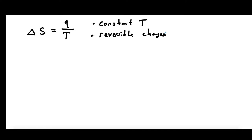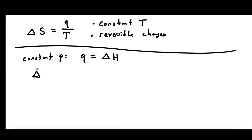Now often, we'll be working at constant pressure. So if we impose constant pressure, then the heat transfer is going to equal the change in enthalpy delta H. So we can substitute that in and say delta S is going to be delta H over T.